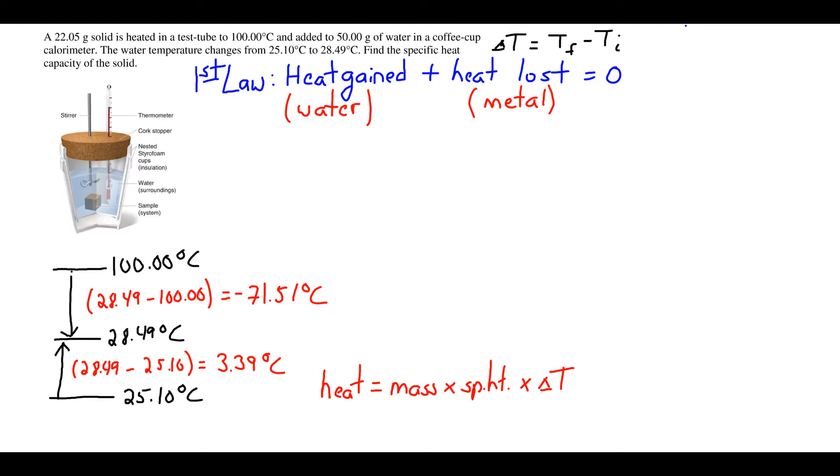This is a calorimetry problem. We're going to apply the first law: heat gained plus heat lost equals zero. Our situation is that we take a piece of hot metal and put it in a calorimeter cup. The temperature of the water increases and the temperature of the hot metal decreases.